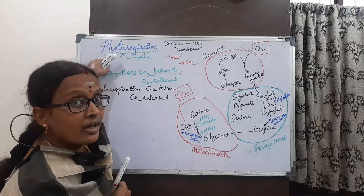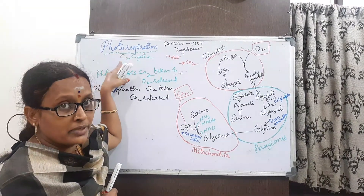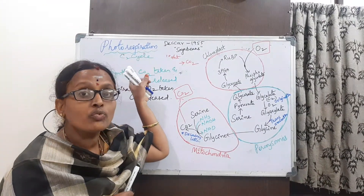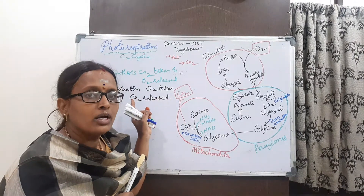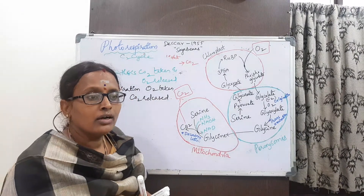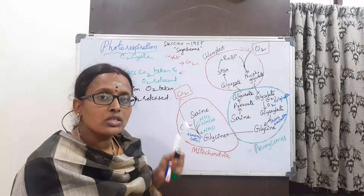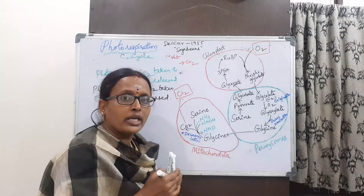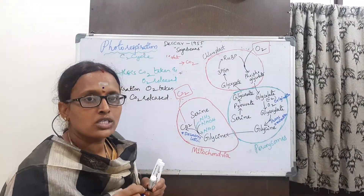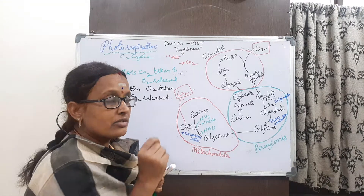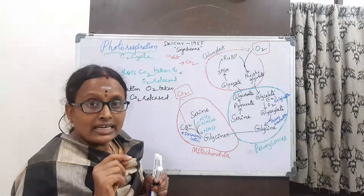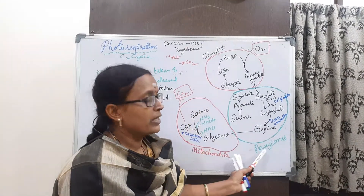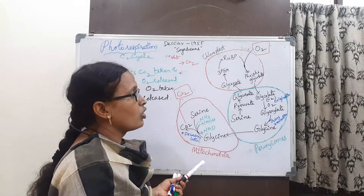We compare this with respiration because we call it photo-respiration: 'photo' means it takes place in the presence of light only. When the concentration of oxygen is more in the atmosphere, RuBP binds with oxygen. This photorespiration takes place in three cell organelles: chloroplast, peroxisomes, and mitochondria.